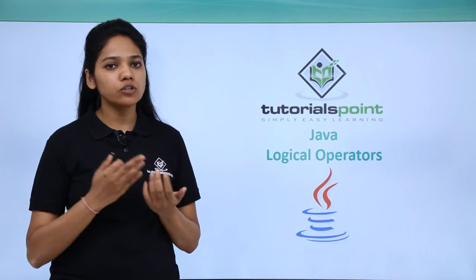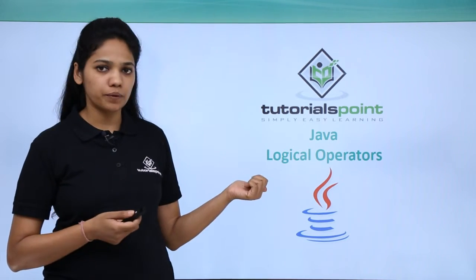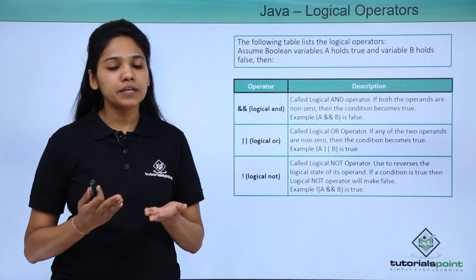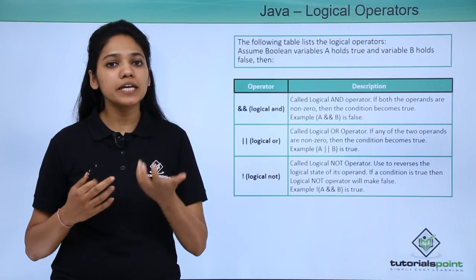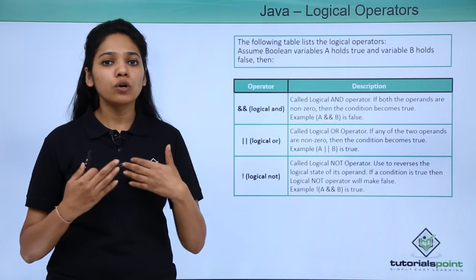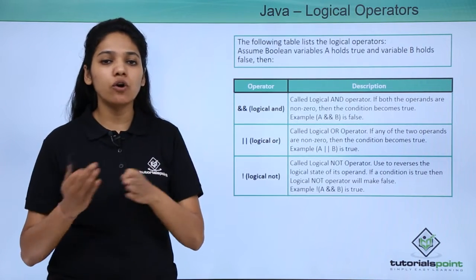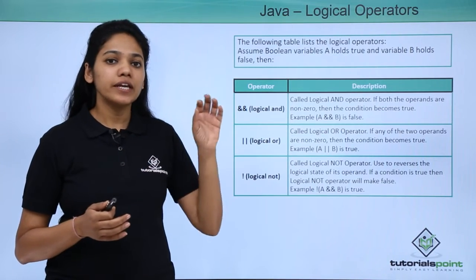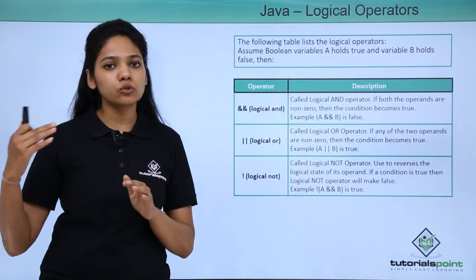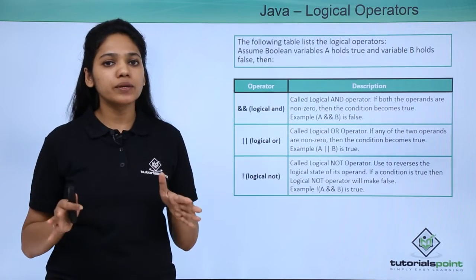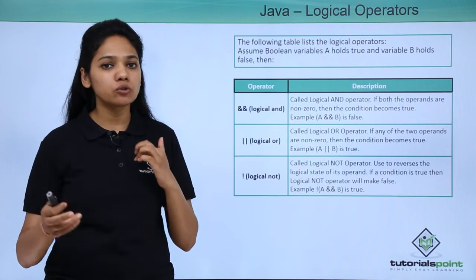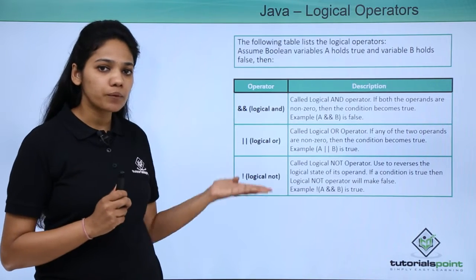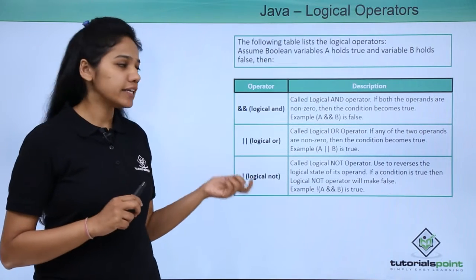Let us see how you can work on operands using a logical operator. As we have already seen, a logical operator helps you understand what the result value of two operands will be. For example, where we are comparing if A is equal to some value and B is equal to some value — if both or either of them are true, what would be the resulting value? Logical operators help us understand this in detail.